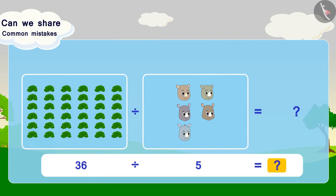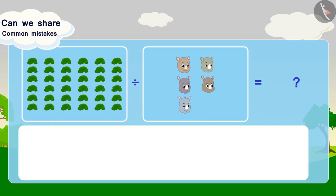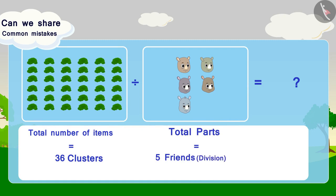In this option, we see that total number of items equals 36 clusters, total parts equals 5 friends. We have to find out how many clusters are there per friend, per part.